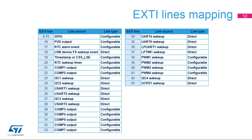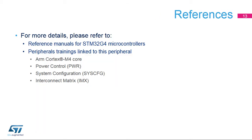This table provides all inputs of the EXTI block present in the STM32G4 microcontroller and indicates for each of them whether it is a configurable event input or direct event input. For more details about the system configuration module, refer to the reference manual for STM32G4 microcontrollers. Refer also to these trainings for more information: ARM Cortex-M4 Core, Power Control or PWR, System Configuration or SysCFG, and Interconnect Matrix or IMX.